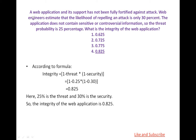Another question: A web application has not been fully fortified against attacks. Web engineers estimate that the likelihood of a replay attack is only 30%. The application does not contain sensitive or controversial information, so the threat quality is 25%. What is the integrity of the web application? According to the formula, integrity equals 1 minus threat multiplied by 1 minus security. The threat is 35% and the attack likelihood is 30%. Putting in the values, we get the answer 0.825. So the integrity of the web application is 0.825.